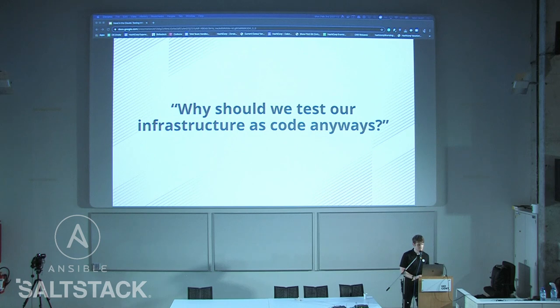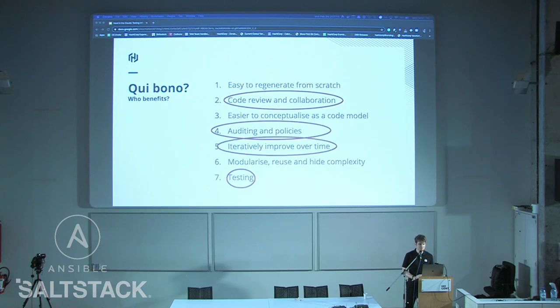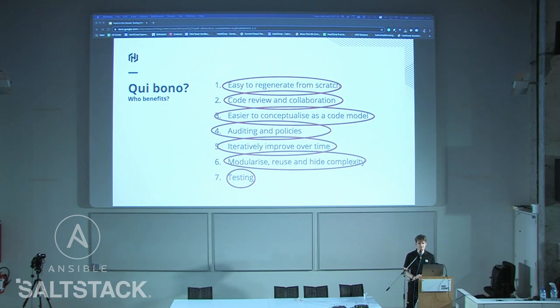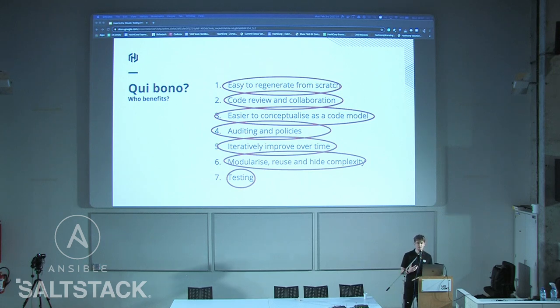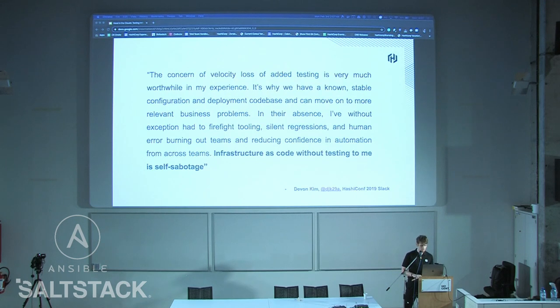So why do we want to test in the first place? Ultimately, everything becomes easier with testing because testing is mostly about being confident in your code and deploys. If you want to regenerate from scratch, you want to be pretty sure your code is doing exactly what you want. If someone's opening a pull request, you want tests to tell you that the code they've written isn't breaking things. I've got a good quote from Devon Kim: 'infrastructure as code without testing is self-sabotage.' Pretty strong words, but I pretty much agree.